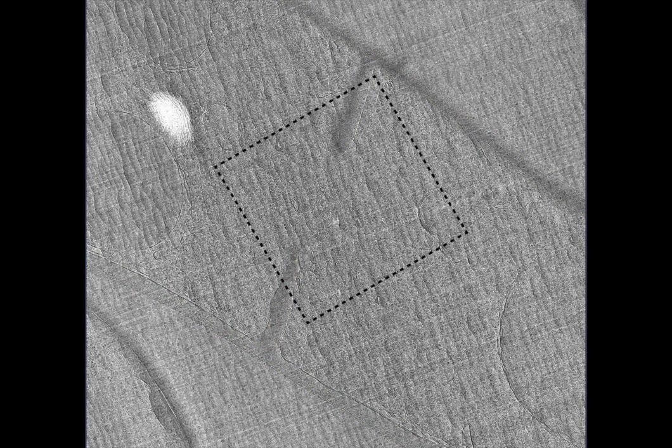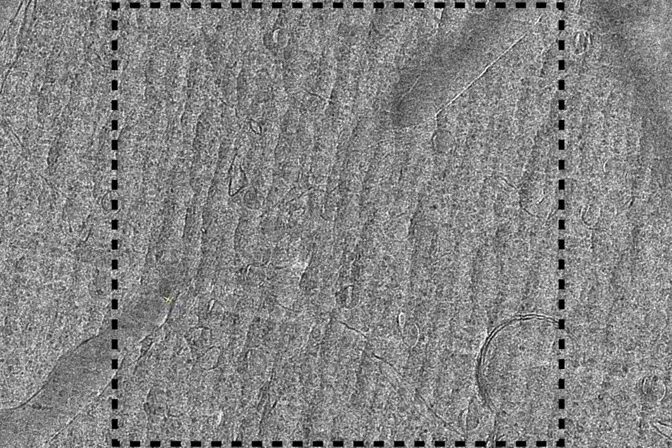In this intermediate magnification image of a cryo-section through a dividing S. pombe cell, the cell wall and the ingressing septum are clearly visible. In such a case, the leading edges of the septum were targeted for higher magnification tilt series imaging.